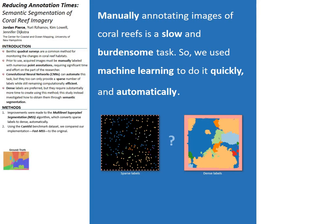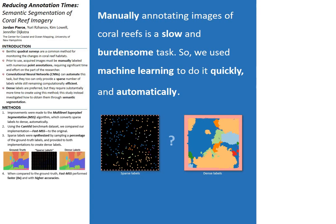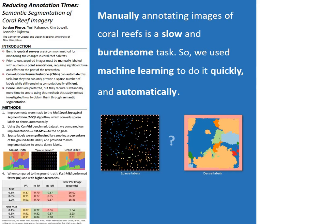We compared our implementation, which we refer to as FastMSS, to the original using the CamVid semantic segmentation benchmark dataset. Our comparison consisted of three trials in which we synthesized sparse labels by uniformly sampling some percentage of the ground truth for each image, and then provided them to both implementations to be converted into dense labels. We compared their outputs to the ground truth using pixel accuracy, mean pixel accuracy, and mean intersection over union.